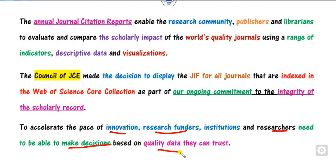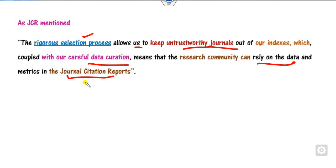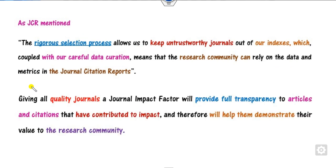Decisions can now be based on quality data that the community can trust. The rigorous selection process ensures that untrustworthy journals are excluded. The research community relies on the data and metrics published by the JCR — such as the impact factor and SNIP parameters. Giving all quality journals an impact factor will provide full transparency to articles and citations, thereby benefiting the research community.